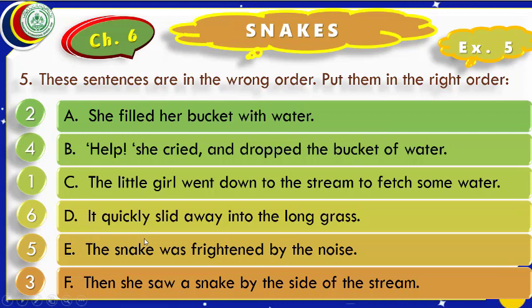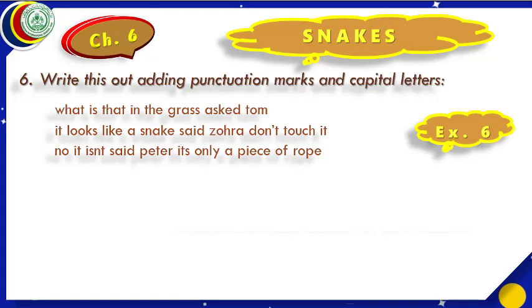Dear students, we have completed exercise 5. Now we shall move to exercise 6. Let us read the instructions: 'Write this out' — meaning write these sentences again, adding punctuation marks and capital letters. Dear students, we shall write these sentences once again, but there are no capital letters, no full stops, and no commas — we shall add punctuation marks and write them again. Let us start from the first line.